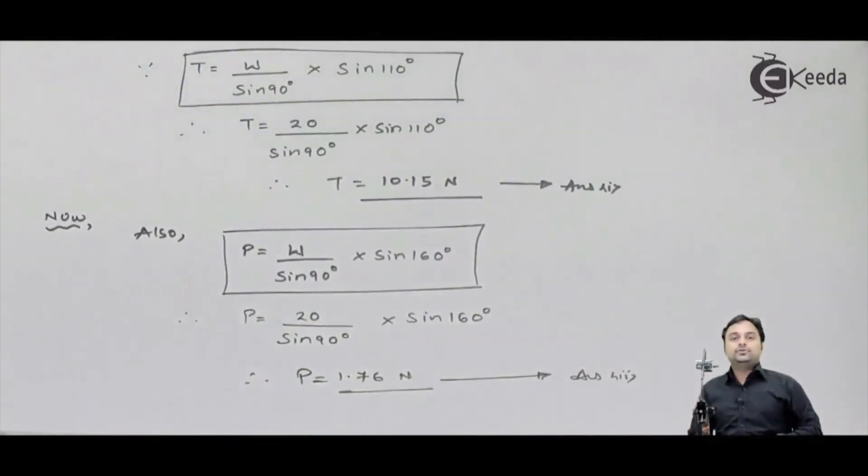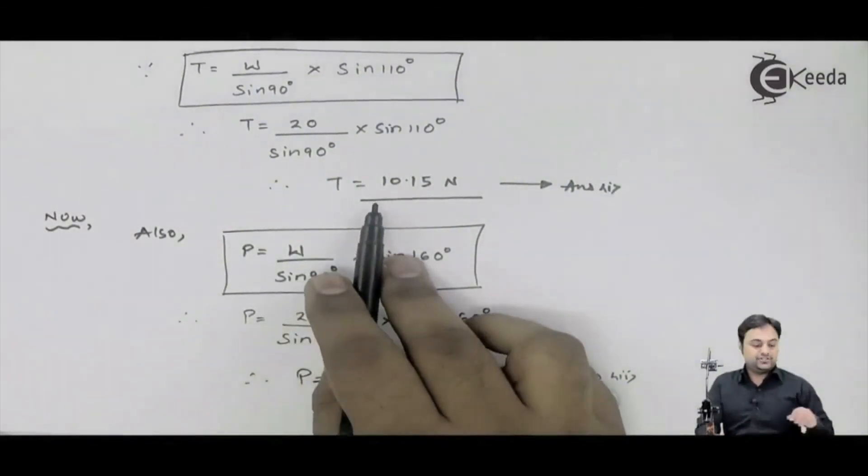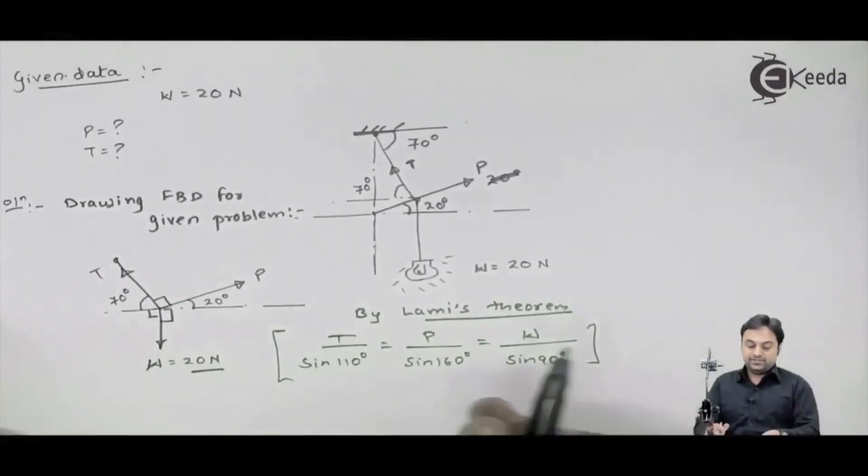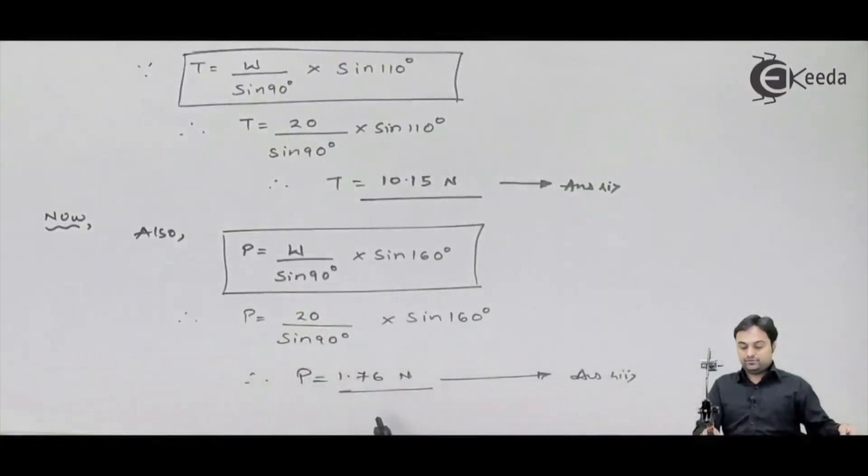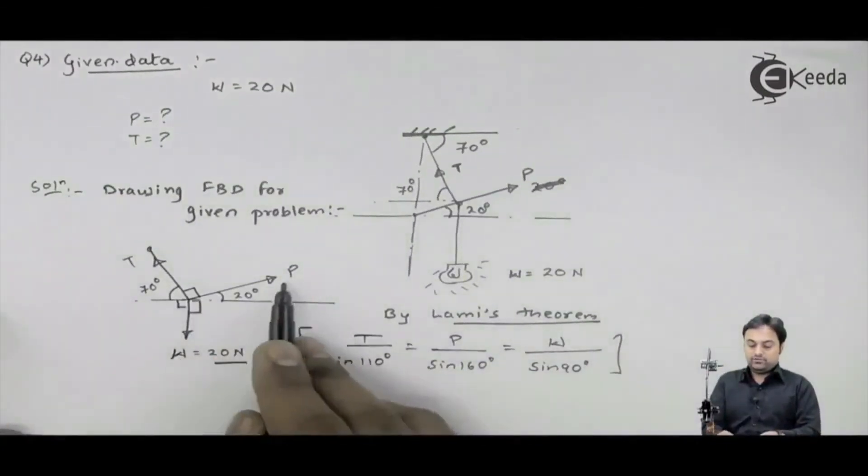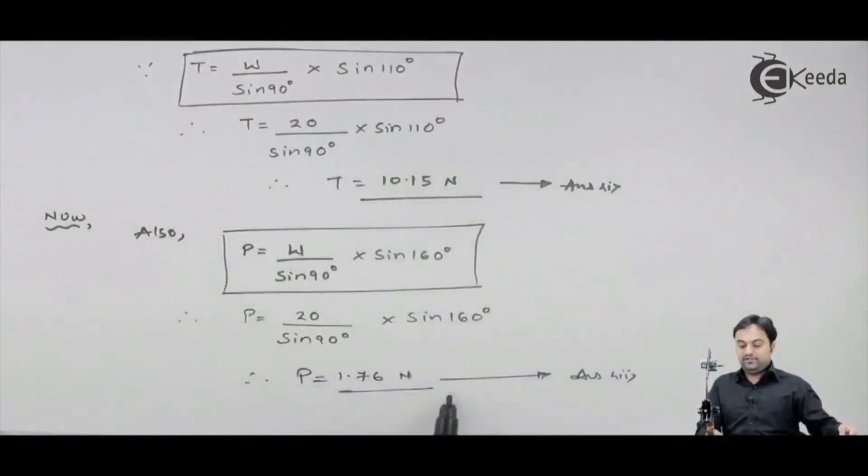So if you see in the question, there were two things asked. One, tension in the string - that tension in the string we have calculated as 10.15 Newtons. Second question was to calculate the value of P, which is the horizontal force, and that value of P we have found it as 1.76 Newtons, and we complete the problem.